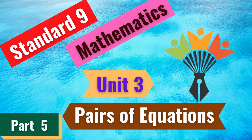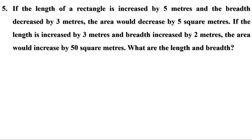Welcome to Maths Companion. In the last video we discussed problems on page 40 and 41. There was a homework — let us check the answer now. If the length of a rectangle is increased by 5 meters and the breadth decreased by 3 meters, the area would decrease by 5 square meters. If the length is increased by 3 meters and breadth increased by 2 meters, the area would increase by 50 square meters. What are the length and breadth?